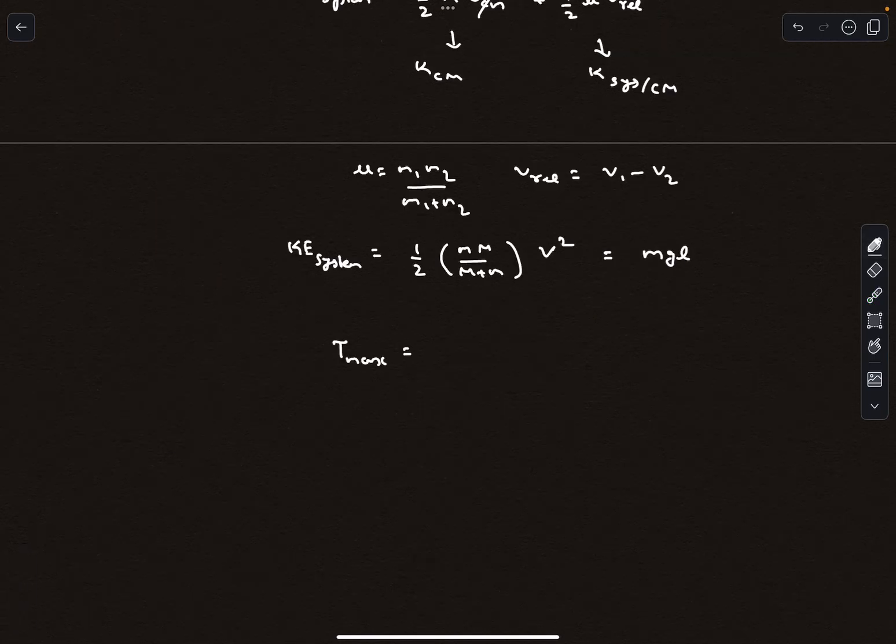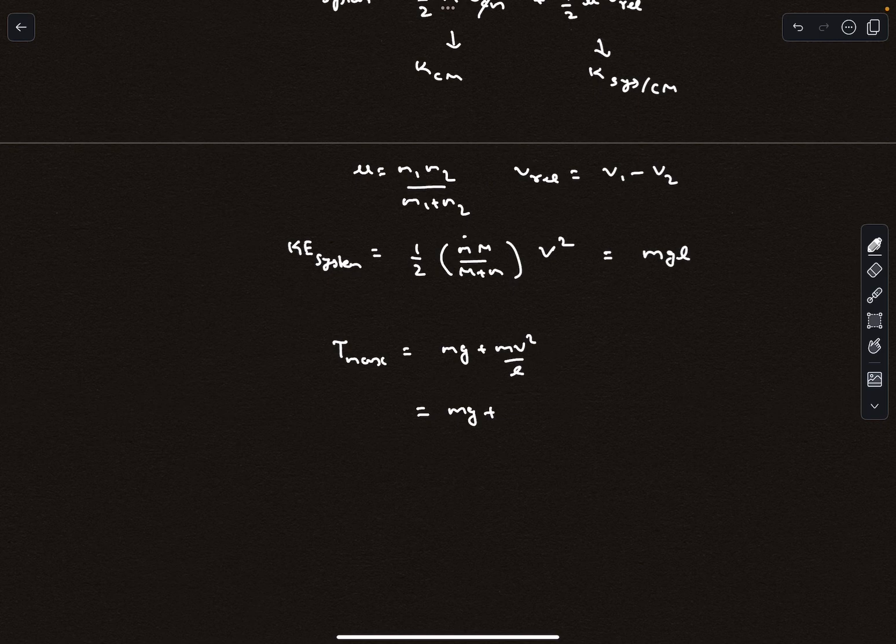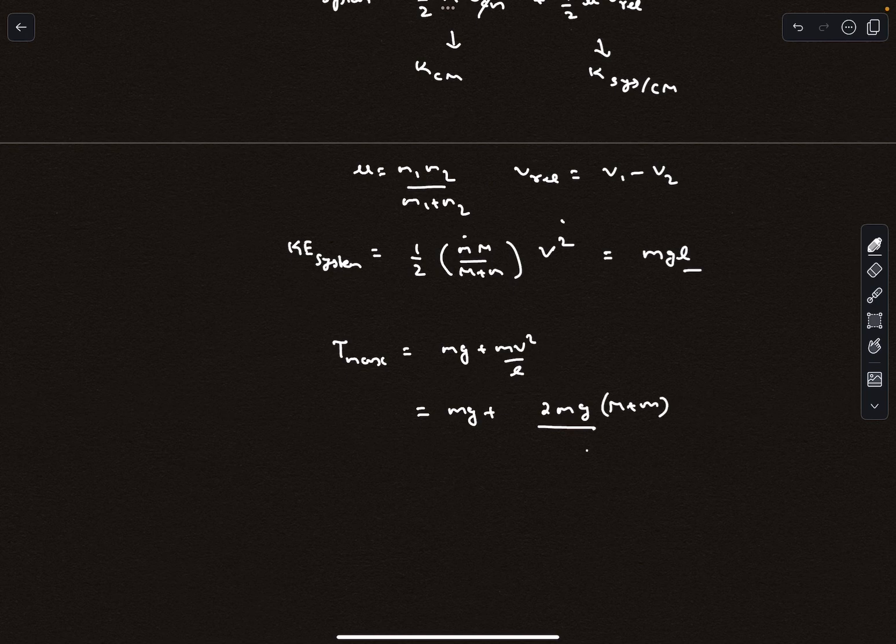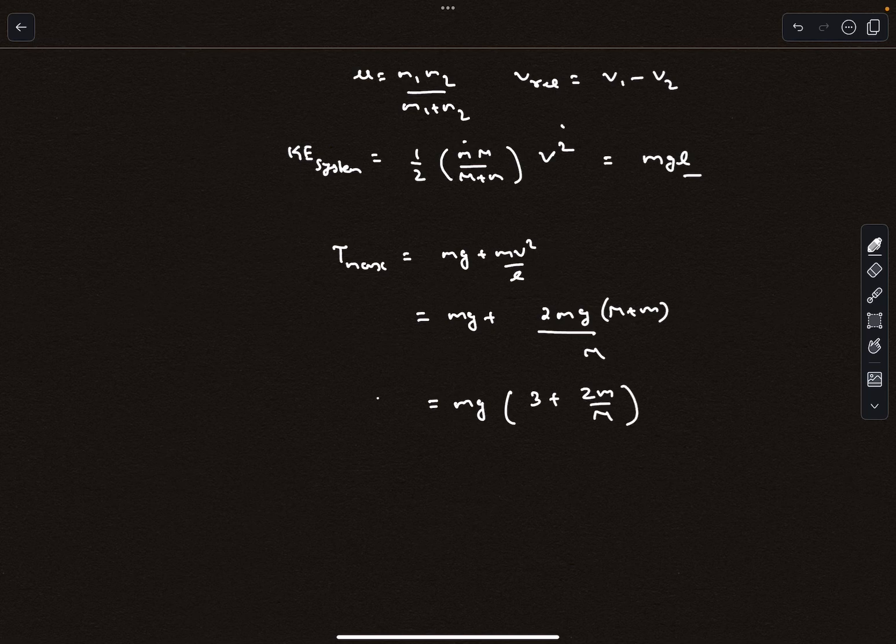T max is simply mg plus m V squared by L, which equals mg plus m V squared divided by L. As you can see, it is 2 mg capital M plus small m divided by capital M, which gives 3 minus 2 small m divided by capital M. So this is the answer for the maximum tension.